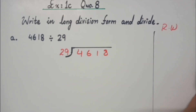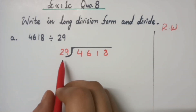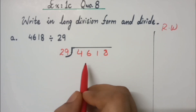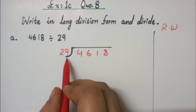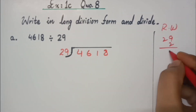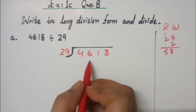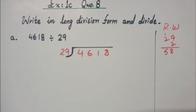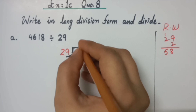The division is going to be done with greater digits so you need to do some rough work. We have to read the table of 29. Obviously 4 is lesser than 29, so let's move towards 46. When we read the table: 29 ones are 29, 29 twos are 58. As we can see 58 is bigger than 46, so we read the table only till 1. 29 ones are 29.